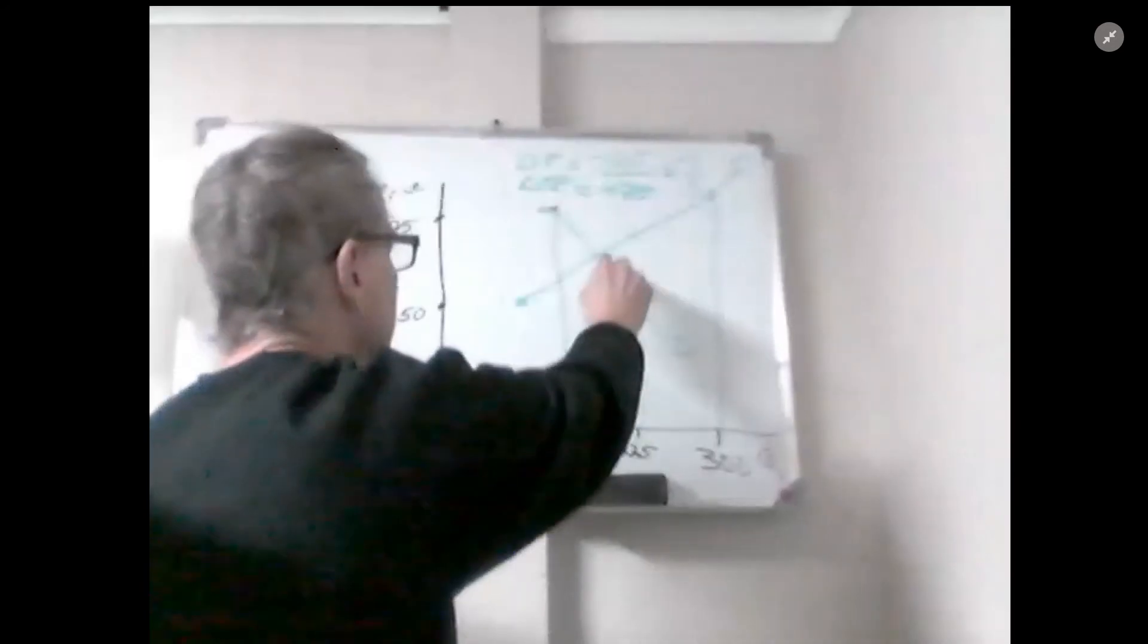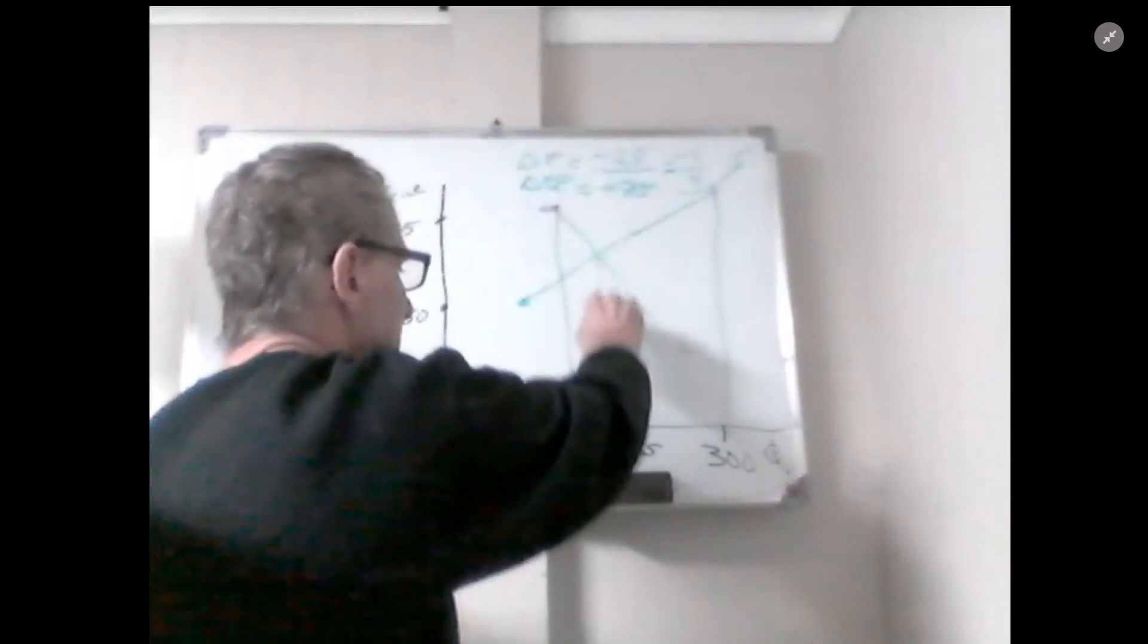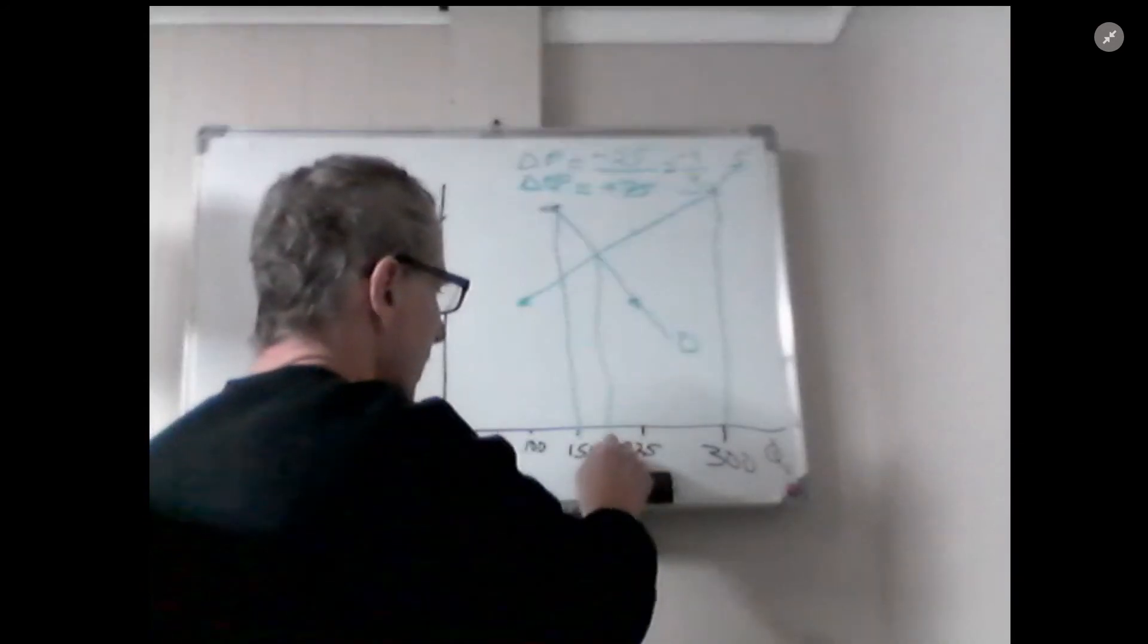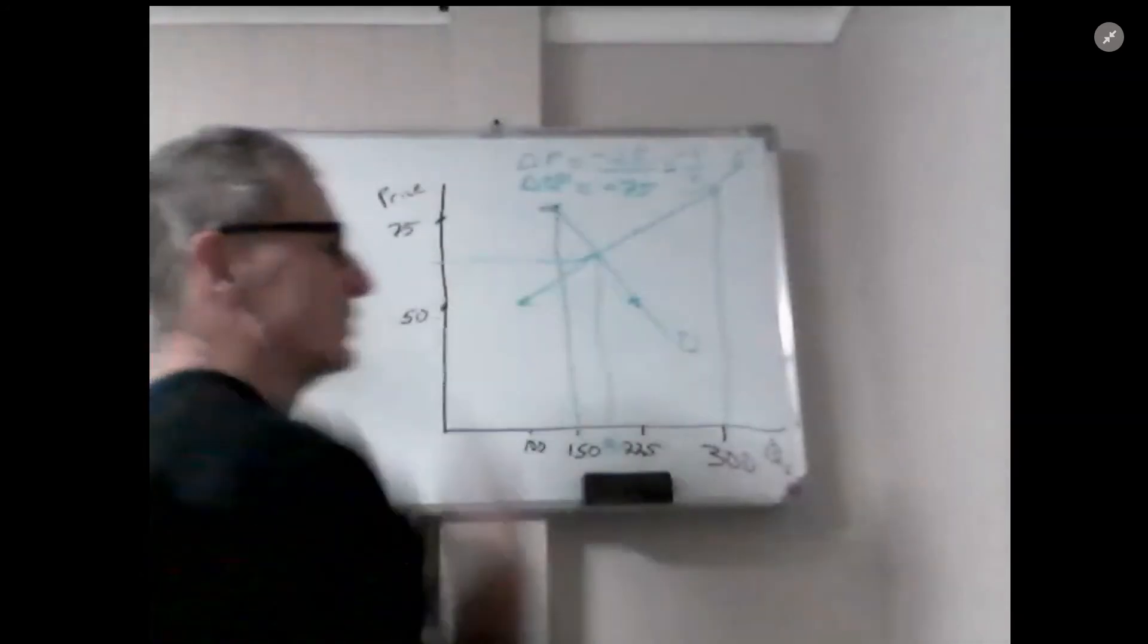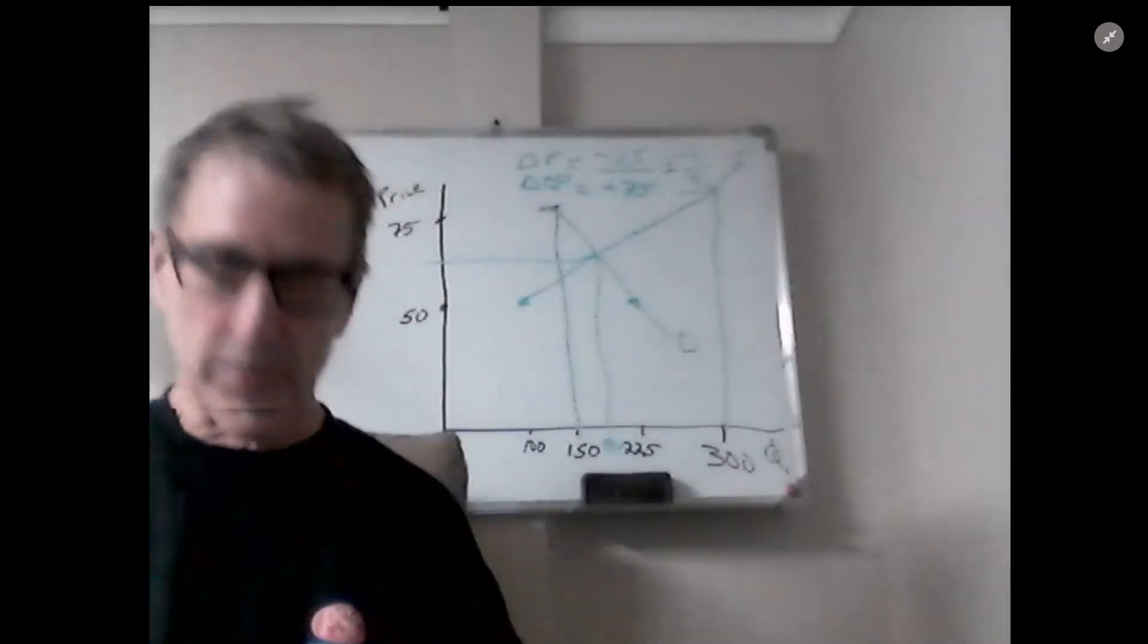We can see that equilibrium is going to take place somewhere around 191,000 tickets with a price in the $60s. I'll let you solve for that - it's pretty straightforward.